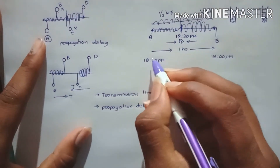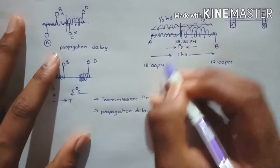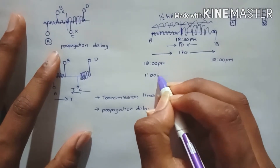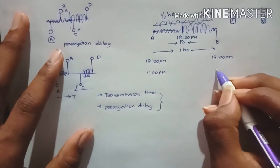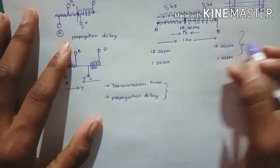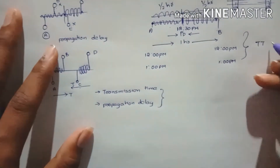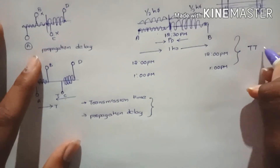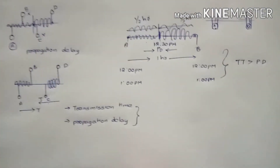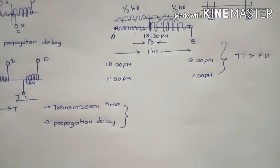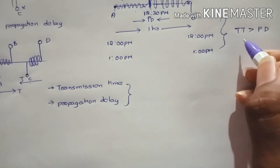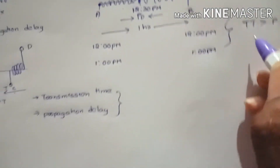So A will know its data is collided at 1 pm — half an hour to reach midpoint plus half an hour for the collision signal to return. B also detects the collision at 1 pm. The condition here is: the transmission time must be greater than the propagation delay.